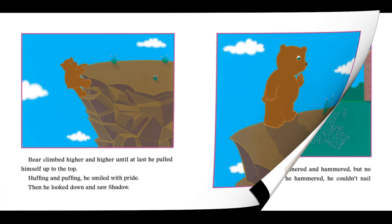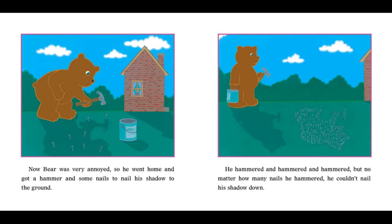Now Bear was very annoyed, so he went home and got a hammer and some nails to nail his shadow to the ground. He hammered and hammered and hammered. But no matter how many nails he hammered, he couldn't nail his shadow down.